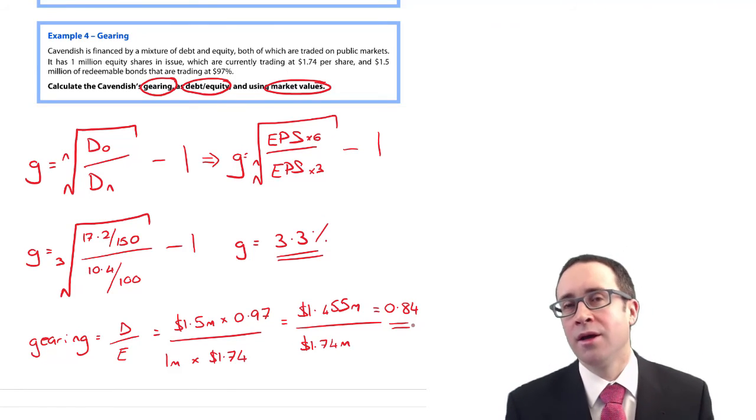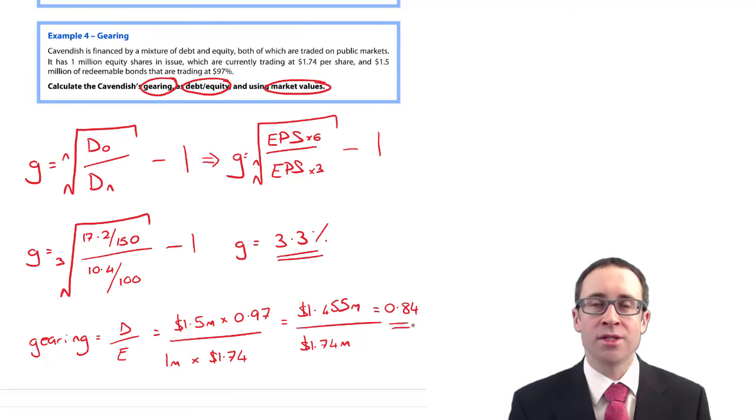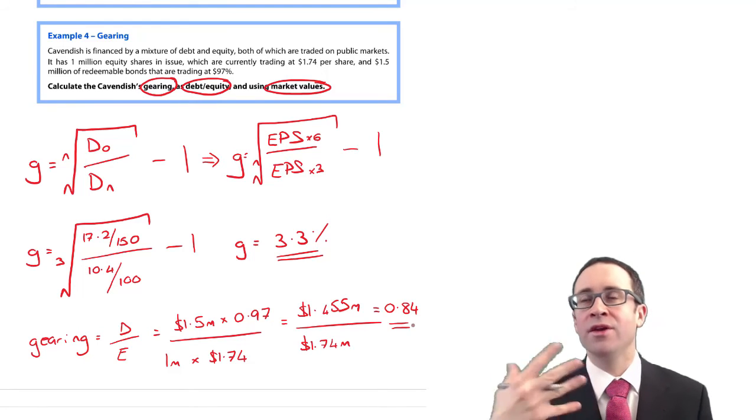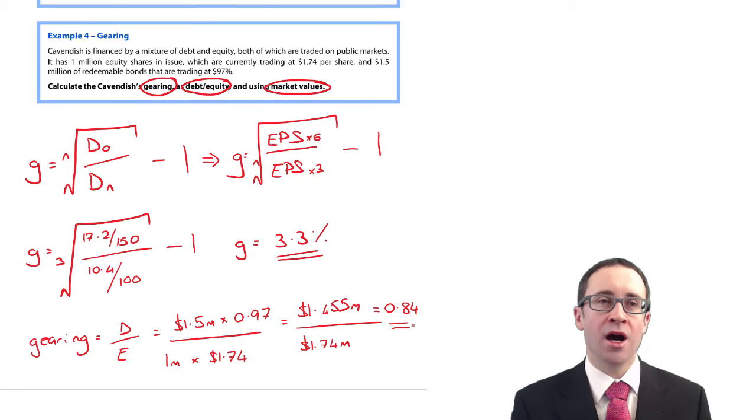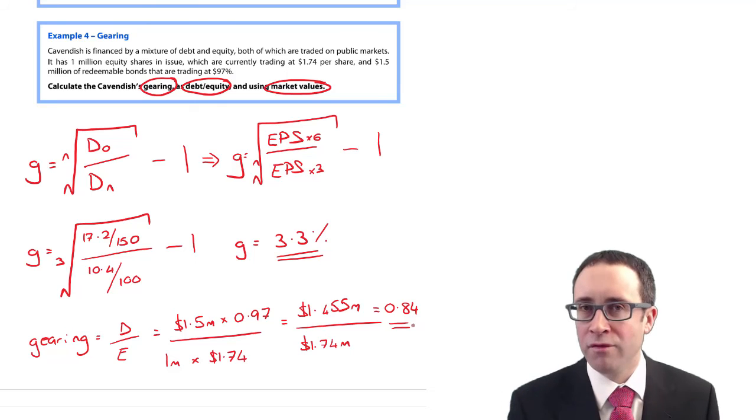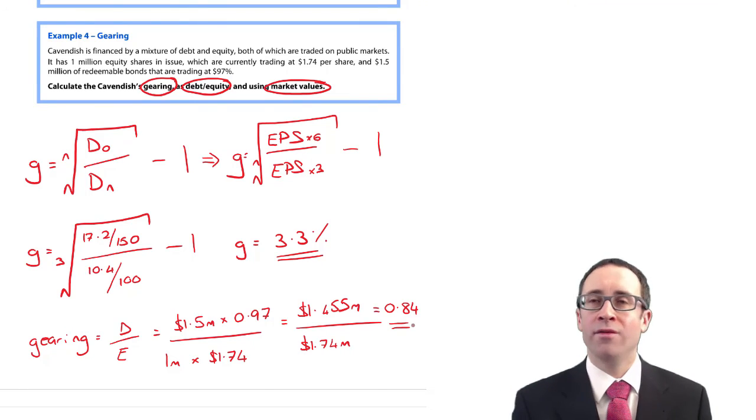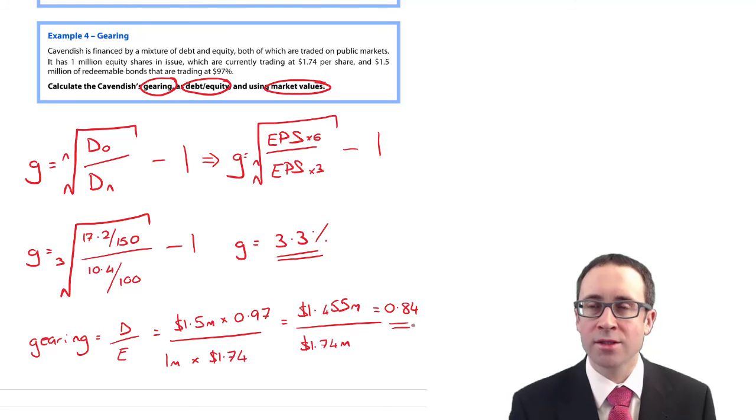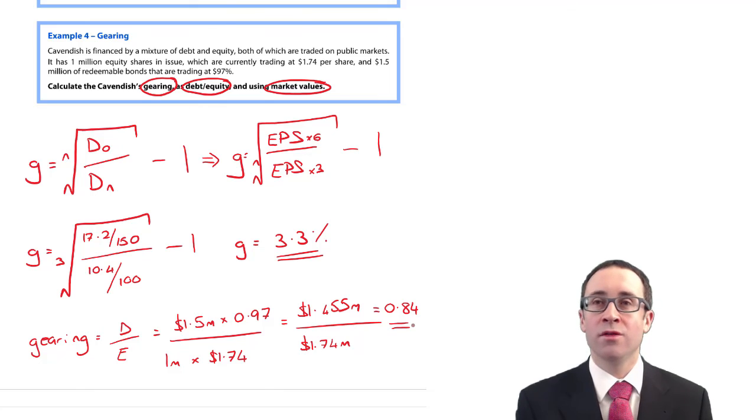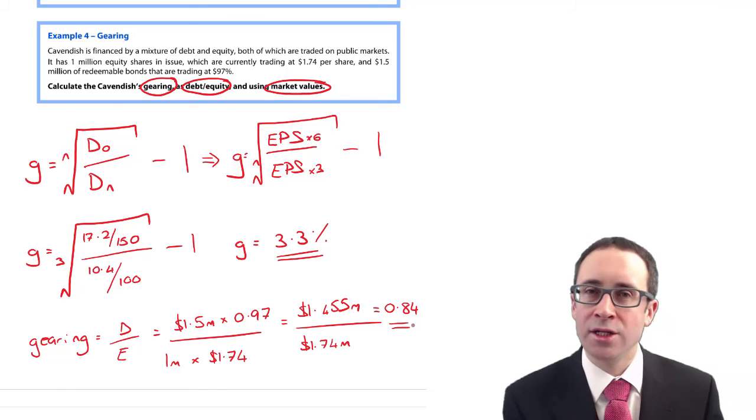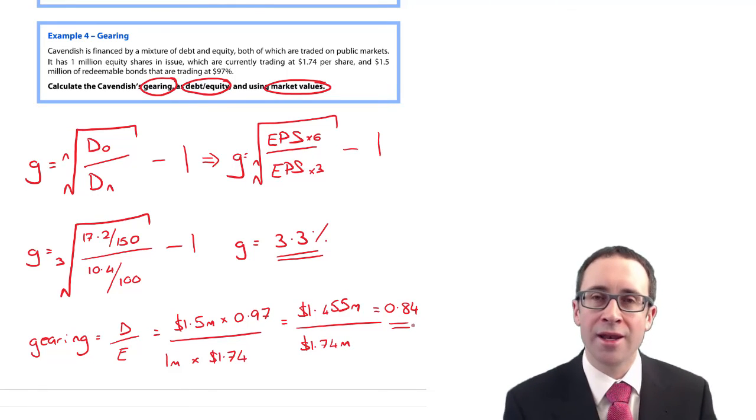How this could be used is we might set a financial objective that we need to keep the level of debt to equity below a particular target. If our target was 0.75, then we are above that gearing level and have not met that financial objective. Similarly with earnings per share, if we had set a growth rate historically of 4% but only made 3.3% over those three years, we've not met that target.